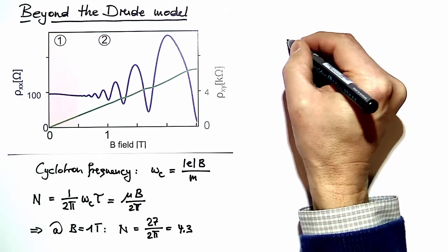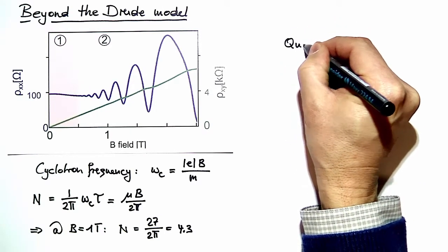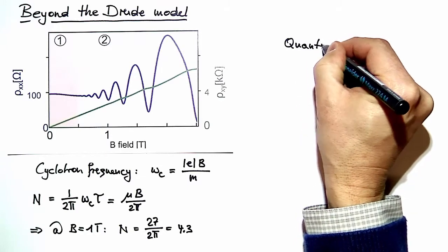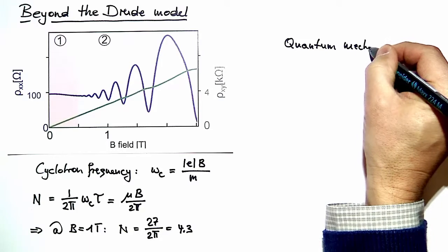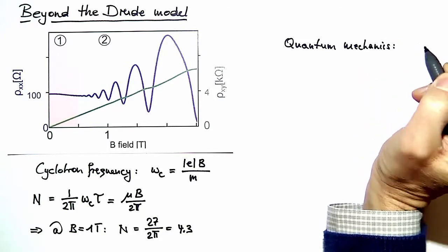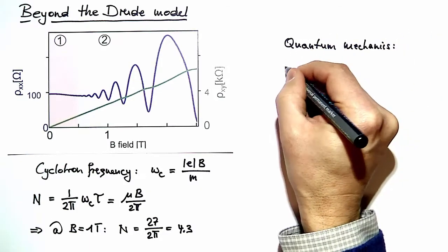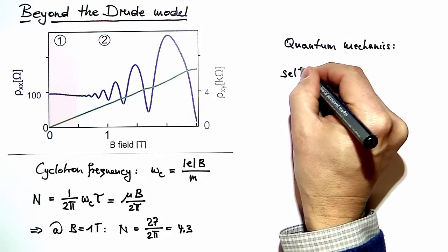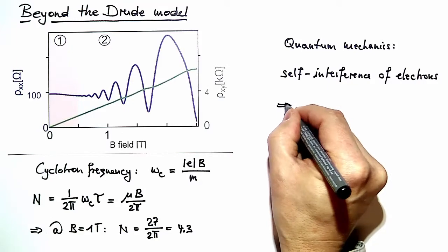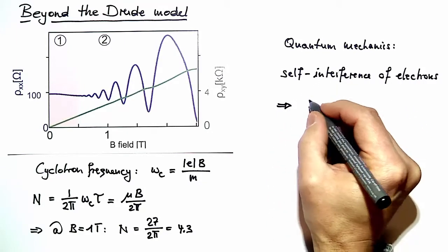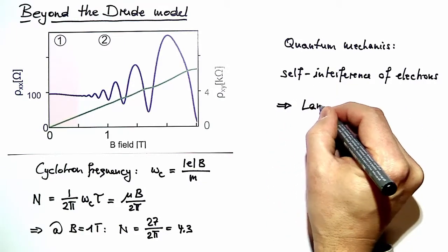So quantum mechanics gives us new features beyond the Drude model, which is based on the self-interference of electrons. This self-interference will lead to quantized states, and we know that these quantized states in the magnetic field are called Landau levels.